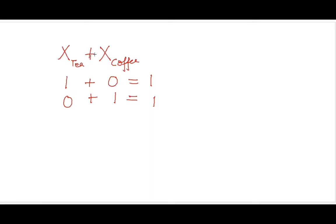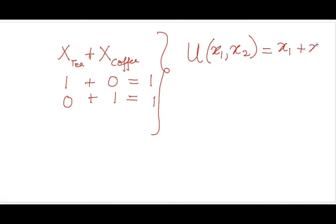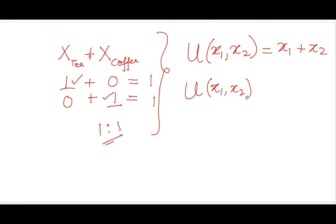For substitutes, I can say u(x1, x2) is equal to x1 plus x2. Now here we have taken a specific situation where a cup of tea and a cup of coffee are in the ratio one-to-one. What if I have a different ratio but still have some substitution between the two goods? In that case I can modify this utility function to accommodate a different ratio and write it as ax1 plus bx2.